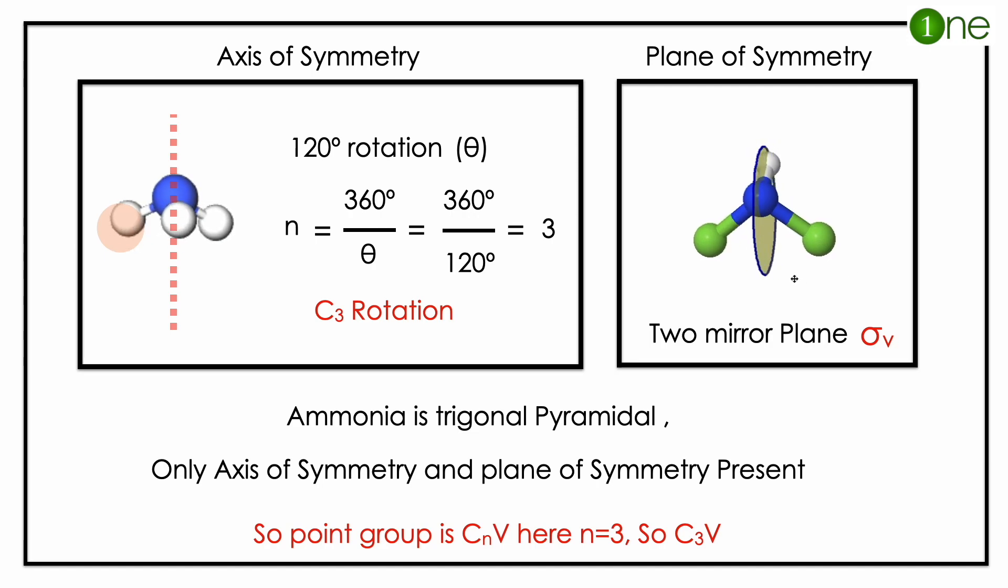And it has plane of symmetry which is sigma v. Sigma v means you have parallel axis which is vertical to the principal axis. So you have one symmetry there, you have one mirror plane and C3 rotation.